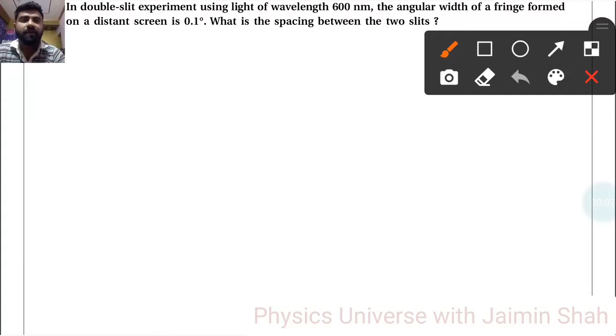In a double-slit experiment using light of wavelength λ = 600×10^-9 meters, the angular width of the fringe formed on a distant screen is θ = 0.1 degrees.